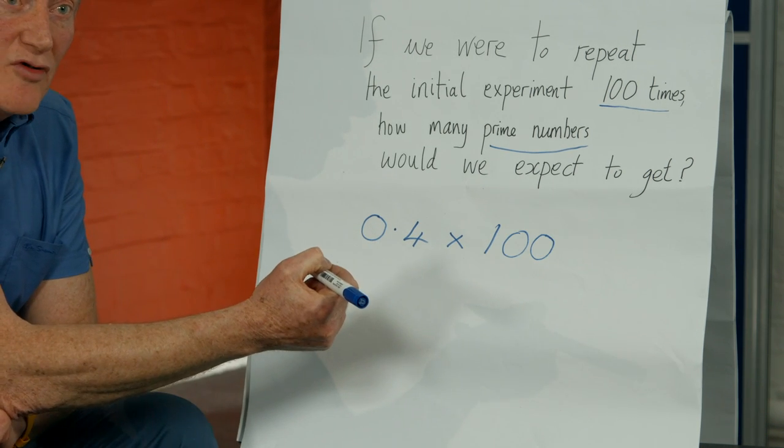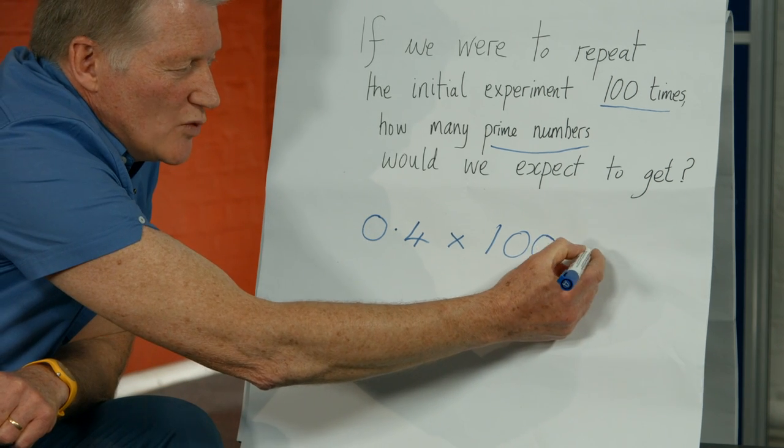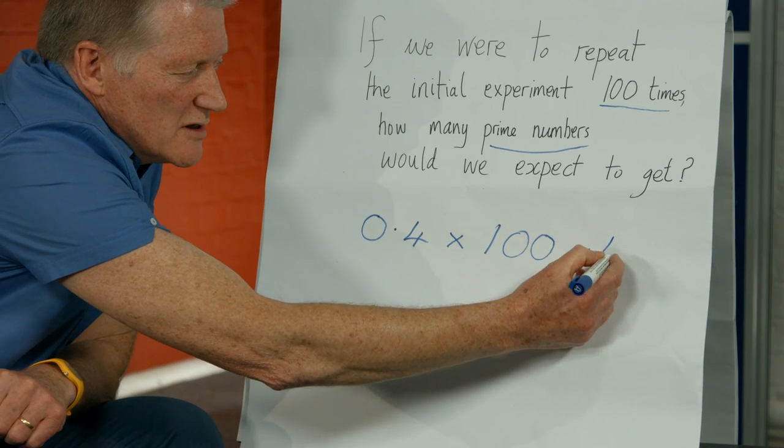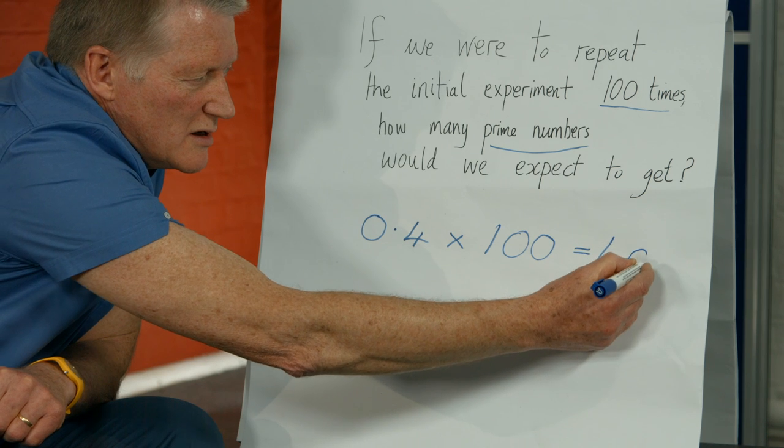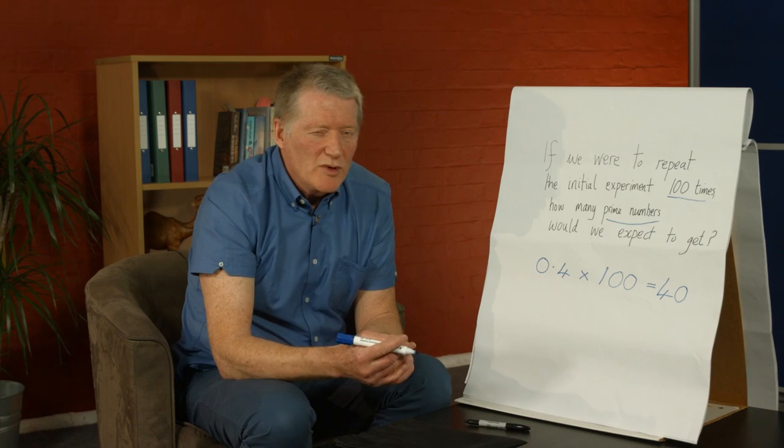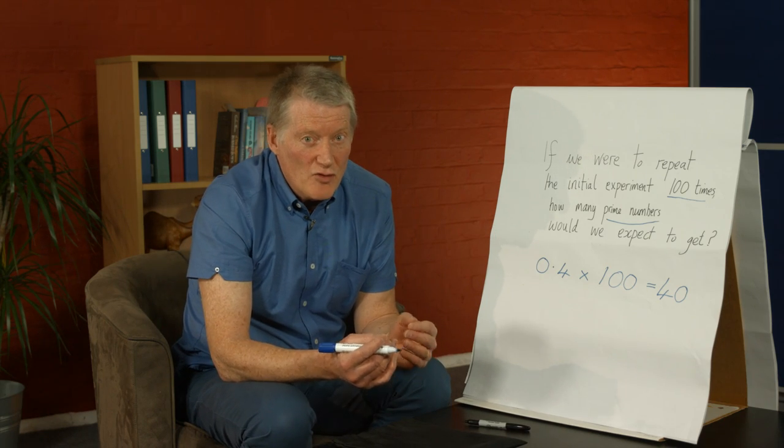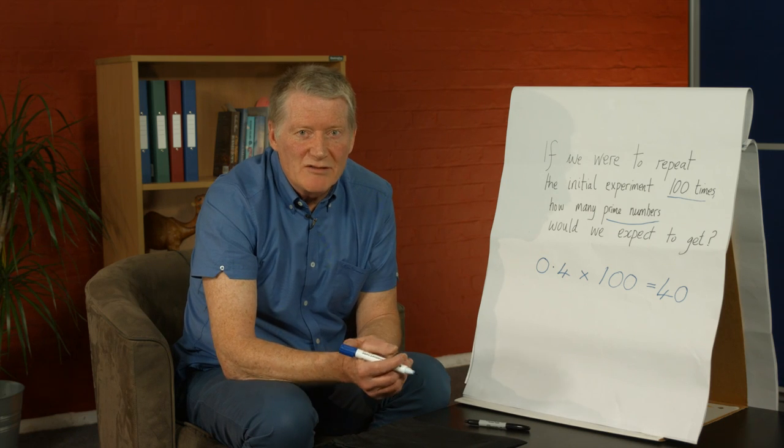So 0.4 times 100 equals 40 times. So we would expect to get 40 prime numbers picked out of the bag.